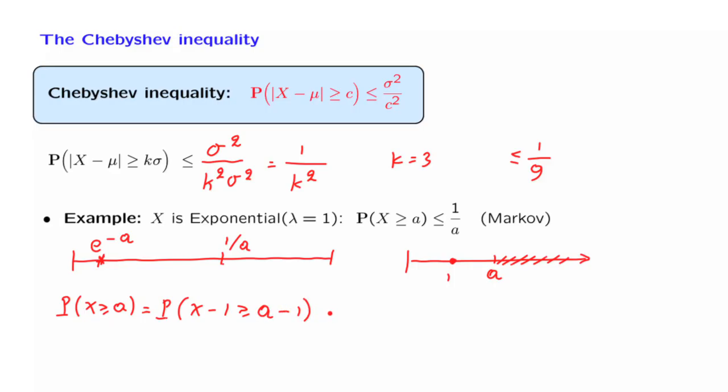And now, this event is smaller than the event that the absolute value of x minus 1 is larger than a minus 1. This is because if this event is true, then that event will also be true.